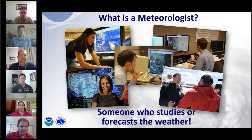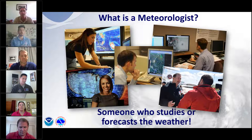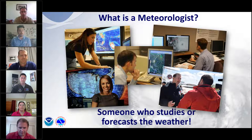A meteorologist is someone who studies or forecasts the weather. Most people think about meteorologists as those people on TV telling you what to expect tomorrow — should you bring your umbrella, is it going to rain, is it going to be sunny. But many meteorologists aren't on TV. We study the weather, we forecast the weather, especially for hurricanes. In Jeremy's case, he flies airplanes into hurricanes — he's still a meteorologist. There are many different kinds of jobs in the weather field.